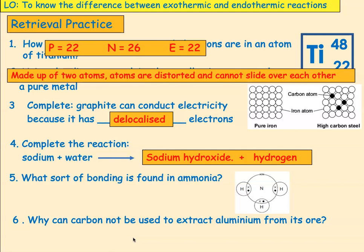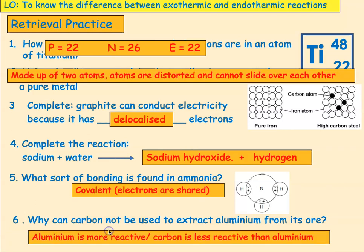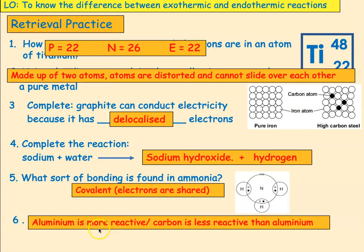What sort of bonding is found in ammonia? It's made of nitrogen and hydrogen. Both of those are non-metals, and we've got what we call a molecule. So it is simple covalent, and the electrons are shared. Why can carbon not be used to extract aluminium from its ore? It's all to do with the reactivity series. In order to use carbon, the carbon has to be higher in the reactivity series than the metal you're trying to extract. Well, aluminium is more reactive than carbon.